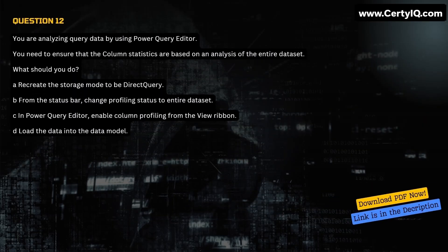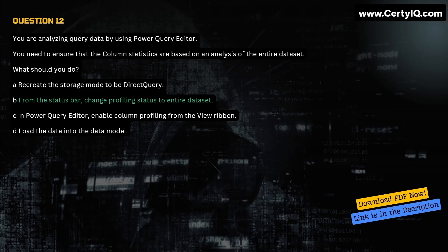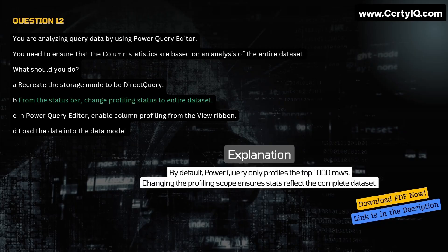Question 12. You are analyzing query data by using Power Query Editor. You need to ensure that the column statistics are based on an analysis of the entire dataset. What should you do? A. Recreate the storage mode to be Direct Query. B. From the status bar, change profiling status to entire dataset. C. In Power Query Editor, enable column profiling from the View ribbon. D. Load the data into the data model. Correct answer is B. Explanation: By default, Power Query only profiles the top 1,000 rows. Changing the profiling scope ensures stats reflect the complete dataset.